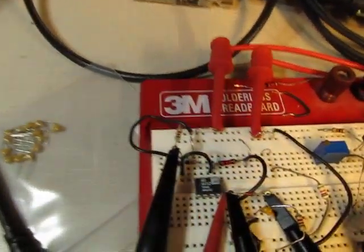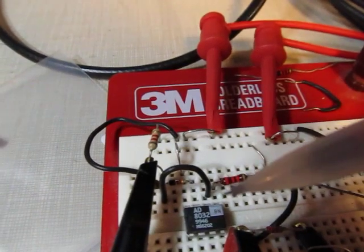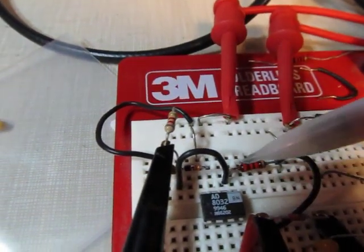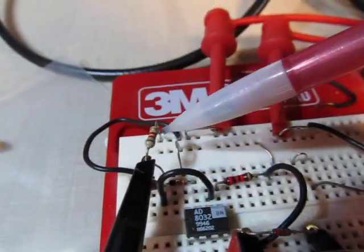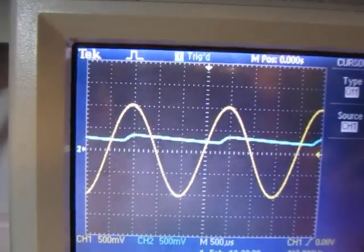So this op amp here is kind of configured as that op amp. There's kind of just an input resistor. There's my diode, my capacitor sitting under the probe there, and there's that bleeder resistor.